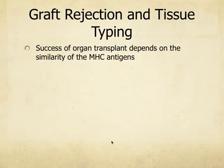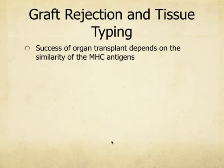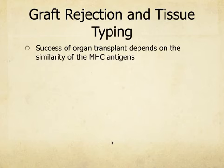Cytotoxic T cells are also the reason why tissues get rejected. The only people who have the exact same MHC1s are identical twins, because they're genetically identical. The more similar the MHC1 antigen is between donor and recipient, the less likely the immune system will consider it foreign tissue. That's why they try to find close family members first for tissue or organ donation — being more genetically similar means MHC1s are more alike, and it's less likely that the tissue will be rejected.